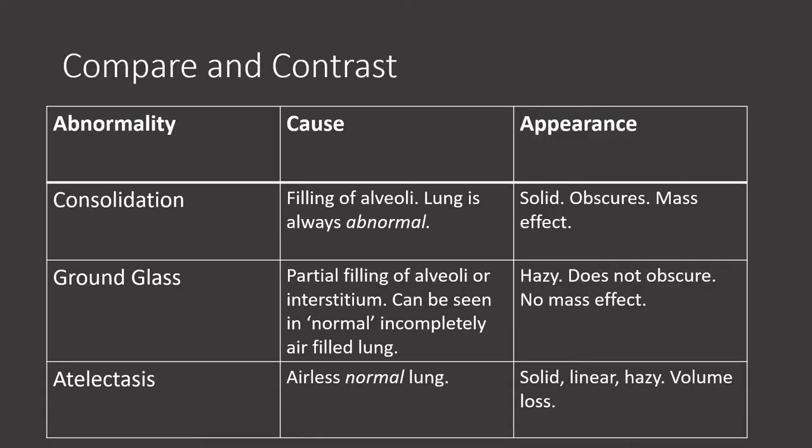This is a chart of all the different opacities we've just discussed — consolidation, ground glass opacity, and atelectasis — including their causes and appearance on CT and chest x-ray. You can pause the video at this time to review this information.